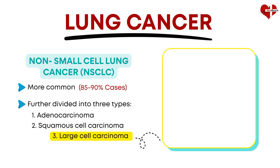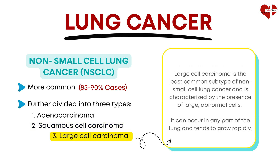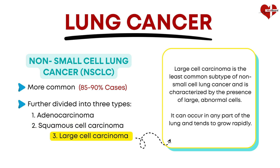Large-cell carcinoma is the least common subtype of non-small-cell lung cancer and is characterized by the presence of large, abnormal cells. It can occur in any part of the lung and tends to grow rapidly.